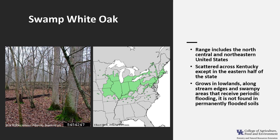It grows in lowlands along stream edges and swampy areas that receive periodic flooding. It is not found in permanently flooded soils. Swamp White Oak is classed as intermediate in shade tolerance.